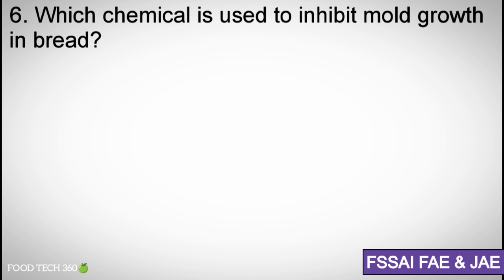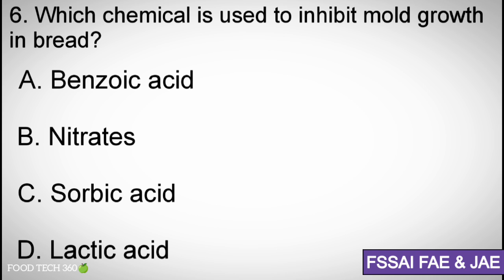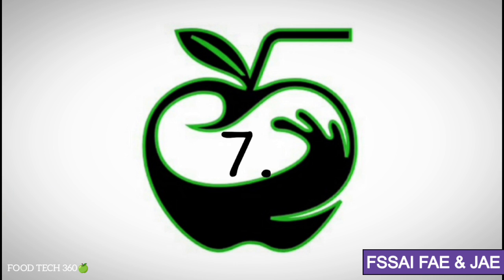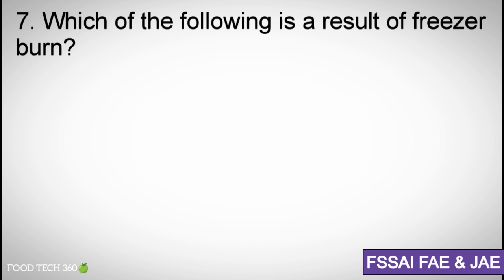Question number 6. Which chemical is used to inhibit mold growth in bread? Options A. Benzoic acid, B. Nitrates, C. Sorbic acid, D. Lactic acid. Correct answer C. Sorbic acid.